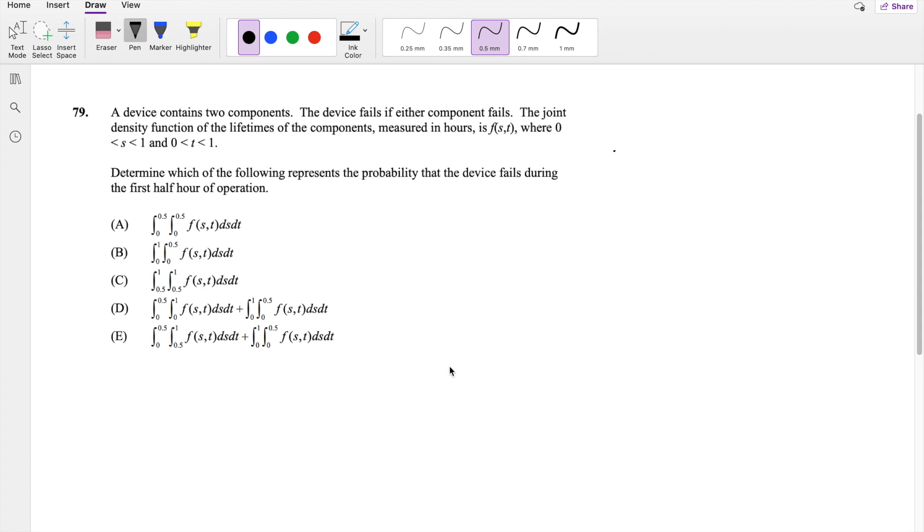In this video, I'll be going over question 79 on SOXMP, so pause the video real quick and try it on your own. Okay, let's just dive right in. The device fails if either component fails, aka if this is S and T. They fail if S fails and T is okay, or S is okay and T fails, or they both fail. These are the three scenarios that this could fail.